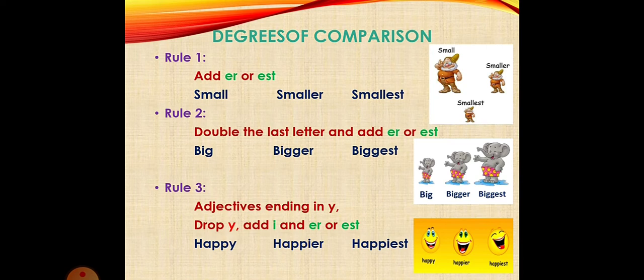Rule number three is when an adjective is ending in Y. In that case, we need to drop Y, add I and ER or EST, as in happy, happier, happiest; easy, easier, easiest.